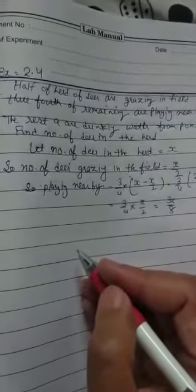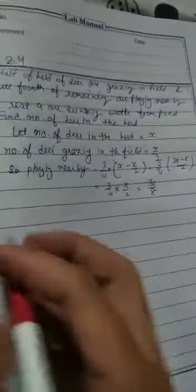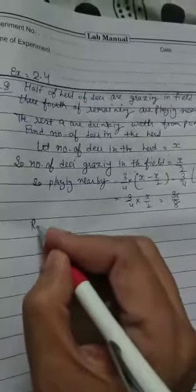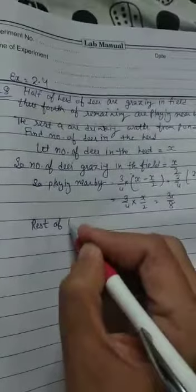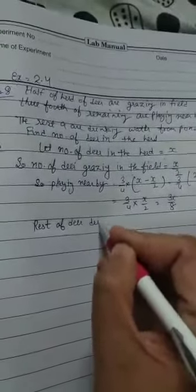Now what does this statement say? The rest nine are drinking water. So what are the rest values? The rest of deer drinking water.